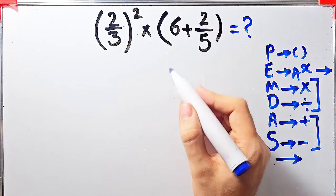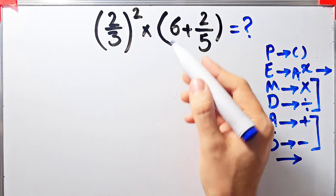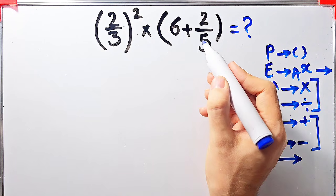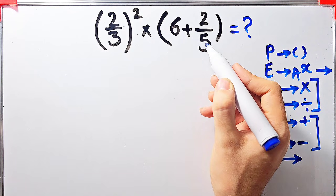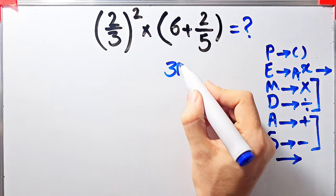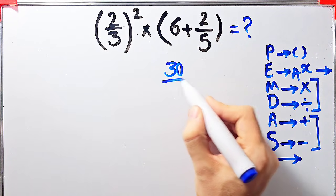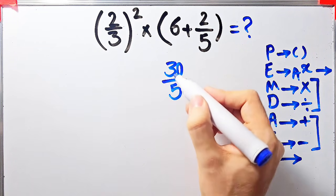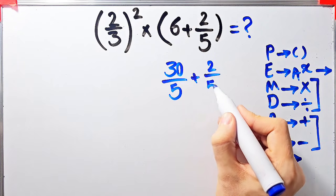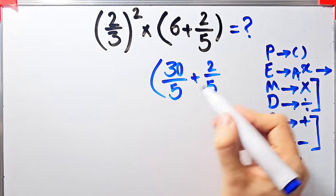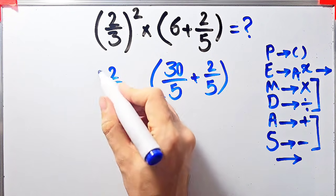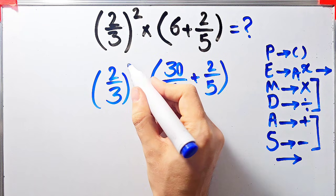According to the PEMDAS rule, in this question we first simplify the parentheses. We have six plus two over five. Since the denominator of this fraction is five, we can write six as thirty over five. Now we have thirty over five plus two over five.